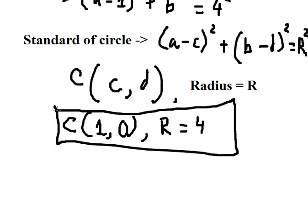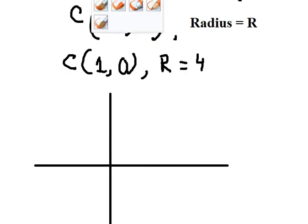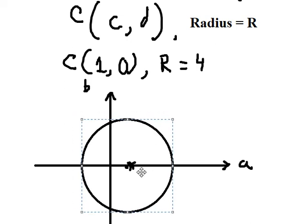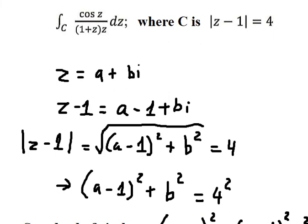Now we need to graph this one. This axis is a and this one is b. a equals one and b equals zero, so the center should be in here. The radius is four, so the circle should look like this. On this side we have number five, and on the other side we have negative three.